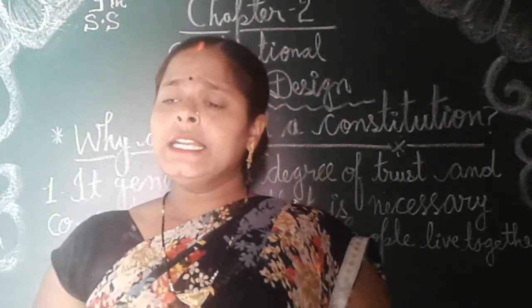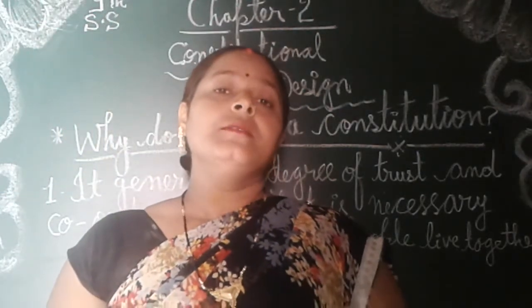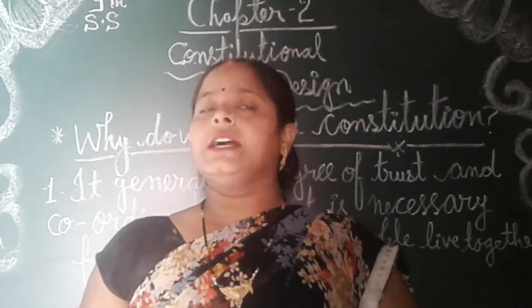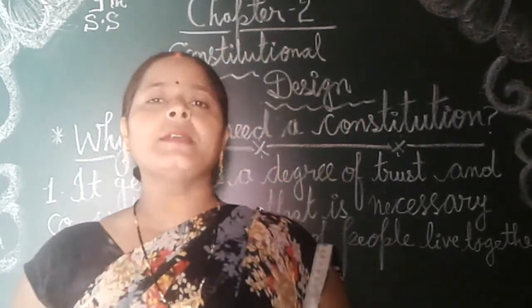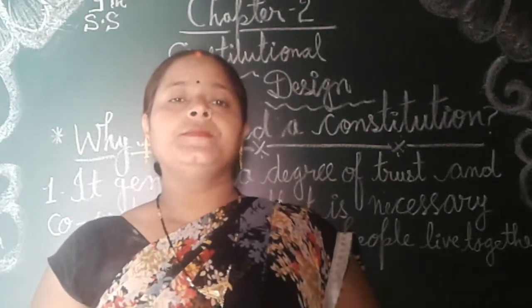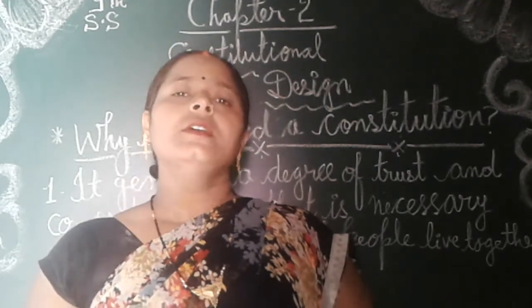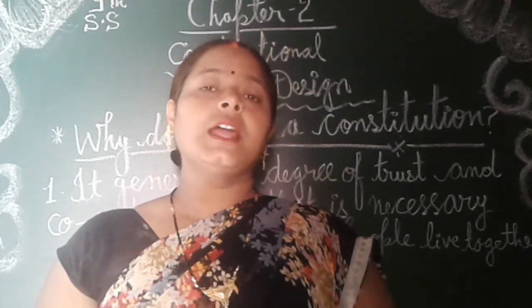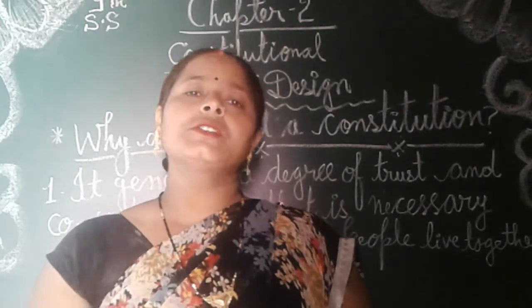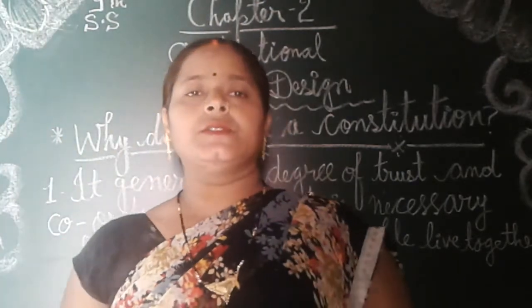The next point is that the constitution expresses the aspiration of the people about creating a good society — like Gandhiji's vision of Ram Rajya, maintaining peace and harmony everywhere. Without rules and regulations, we cannot function. So it is very important that whatever we have to do should be written down and every person should know about it.